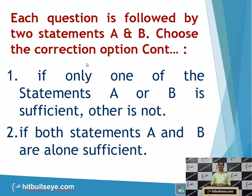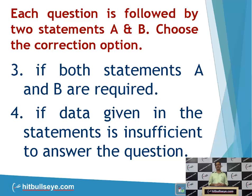Let us take an overview of the directions before starting with the question. Generally, we have four answer options. The first option is that we can answer the question using either statement A or statement B, but not the other. The second option is that we can use both statements A and B individually to get the correct answer. The third option is that we need to use both statements A and B together to get the correct answer. The fourth option is that the data is insufficient to answer the question.